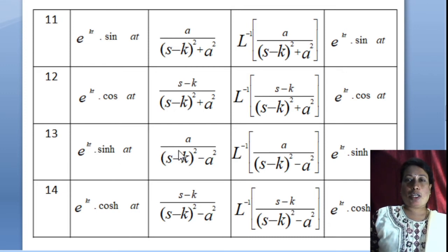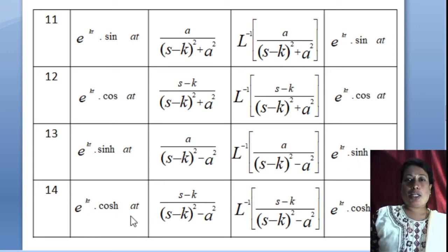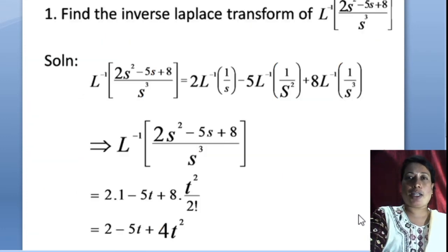Similarly, L⁻¹{a/((s−k)²−a²)} = e^(kt)·sinh(at). And L⁻¹{(s−k)/((s−k)²−a²)} = e^(kt)·cosh(at).